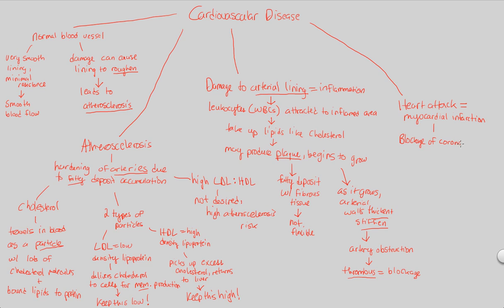The coronary arteries are all over the heart — they're the blood vessels you see on the outside of the heart in pictures, bringing oxygen to the heart for its function. You're going to have a blockage of these arteries by either plaque or thrombi. Those two things are bad for maintaining good circulation. If you have plaque or thrombi causing this blockage, the arteries that are supposed to be delivering O2-rich blood to the heart will be blocked.